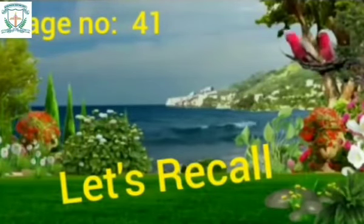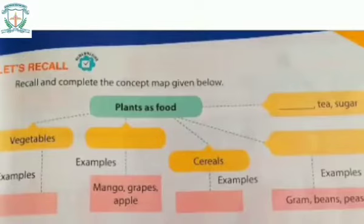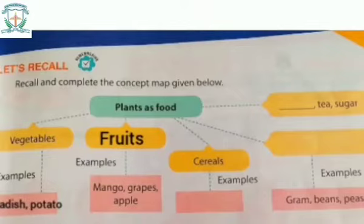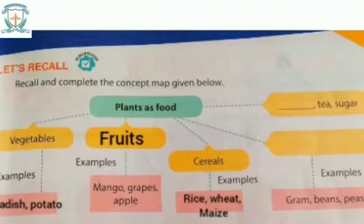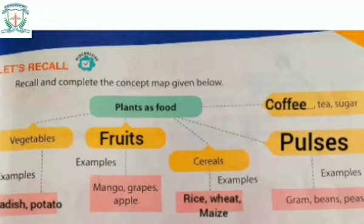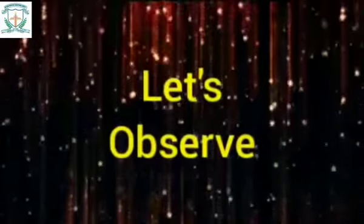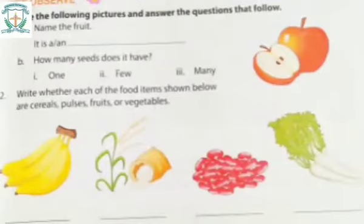Let's recall and complete the concept map. Plants as Food: Vegetables — examples: radish, potato. Fruits — examples: mango, grapes, apple. Cereals — examples: rice, wheat, maize. Pulses — examples: gram, beans. Coffee, tea, sugar.